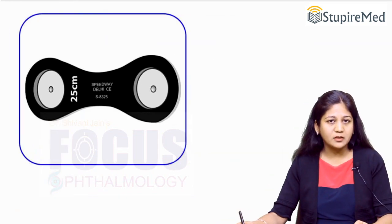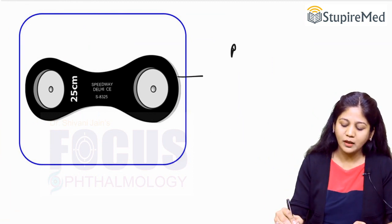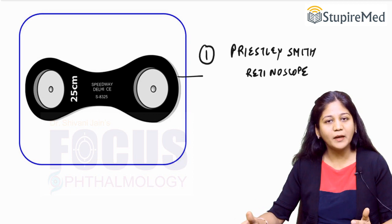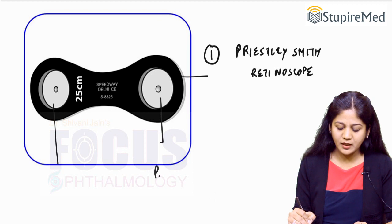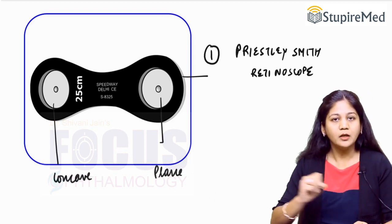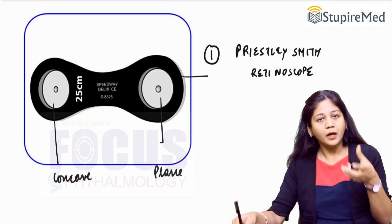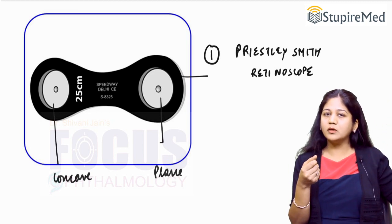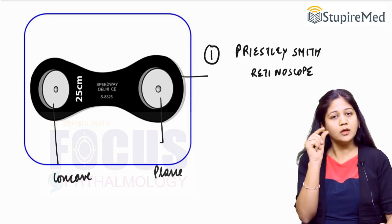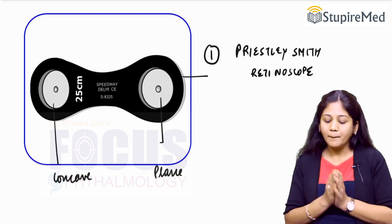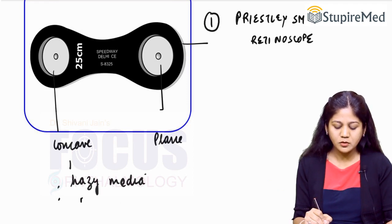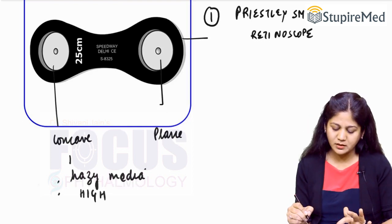Retinoscopy can be done by two types of methods. The first is known as the Prisley Smith retinoscope, which has a plane mirror and a concave mirror as reflecting surfaces, with a small aperture. When we hold the retinoscope in one hand, the source of illumination is behind the left shoulder of the observer. We observe the reflex in the patient's eye through the hole. Most commonly we use the plane mirror; the concave mirror is used when there is a hazy medium or a very high refractive error.